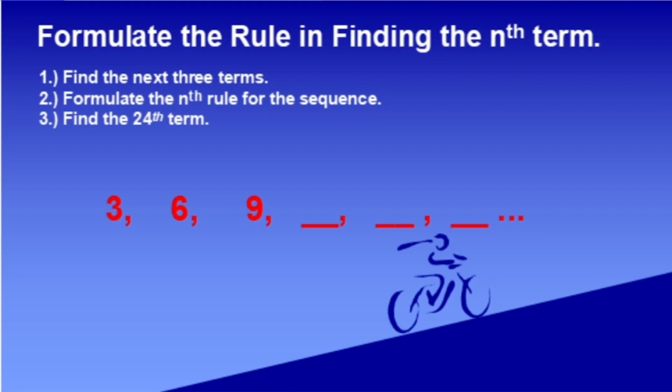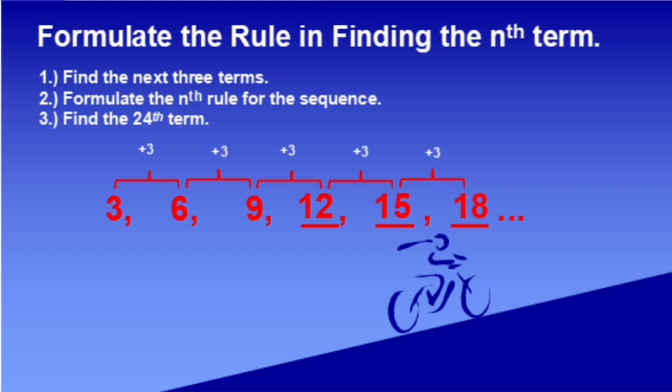Let us work on this. Find the next three terms. This will be easy because you just simply add 3 to get each next number. We have 3 plus 3 is 6, 6 plus 3 is 9, 9 plus 3 is 12, 12 plus 3 is 15, and 15 plus 3 is 18.